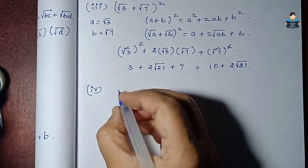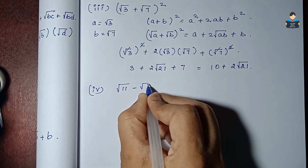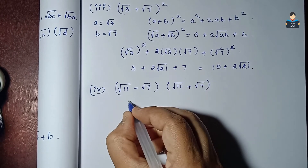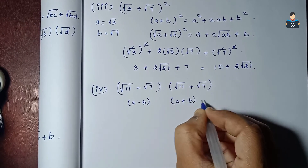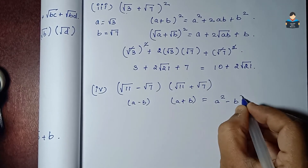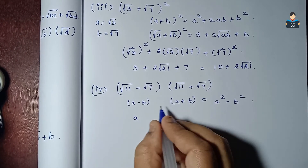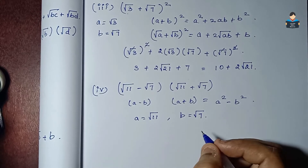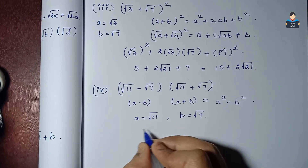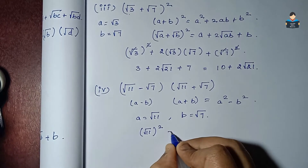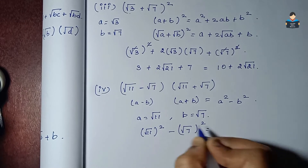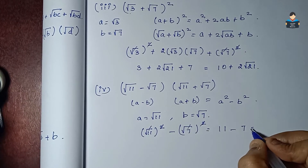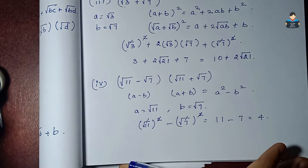Fourth subdivision: (√11 - √7)(√11 + √7). This is of the form (a-b)(a+b) = a² - b². So (√11)² - (√7)² = 11 - 7 = 4.